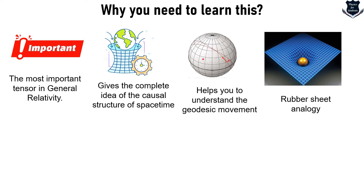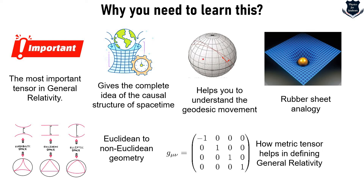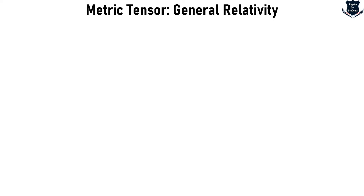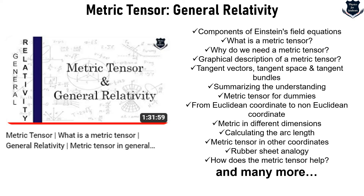The rubber sheet analogy — the dent — and all those measurements are made clear through the metric tensor. It also gives a clear idea of how things change when you move from Euclidean to non-Euclidean geometry. The metric tensor is the defining, pivotal factor guiding general theory of relativity. I have a detailed older video — very popular with subscribers — covering why we need tangent vectors, metric tensor for dummies, moving from Euclidean to non-Euclidean geometry, calculating the arc length, the rubber sheet, and all nine components. Step nine — link in the description.